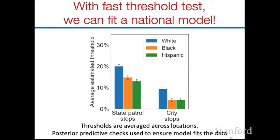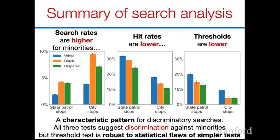Now we can apply the fast threshold test to our national data set. The output shows the average estimated threshold, averaged across locations. The average threshold is lower for Black and Hispanic drivers than for white drivers, suggesting they're being searched on the basis of less evidence. To summarize the search analysis: search rates are higher for minorities, hit rates are lower, and thresholds are lower — a characteristic pattern for discriminatory searches. All three tests suggest discrimination against minorities, but the threshold test is robust to the statistical flaw of inframarginality that affects simpler tests.